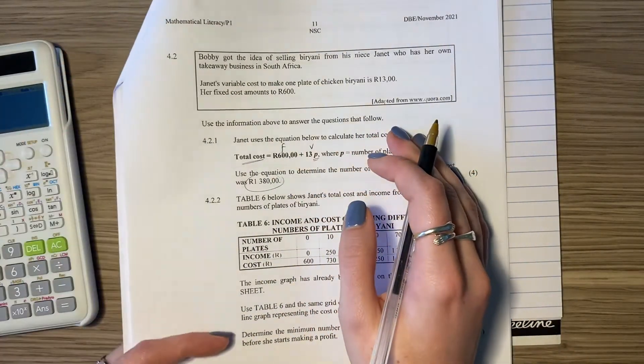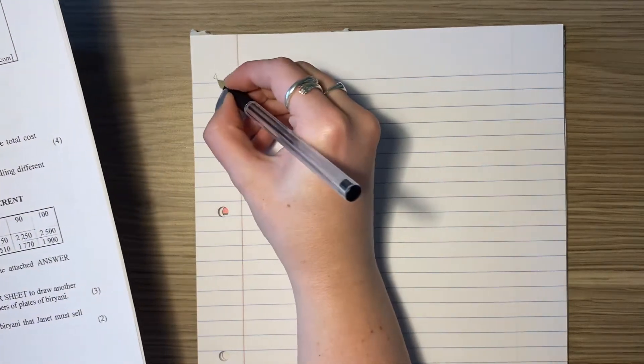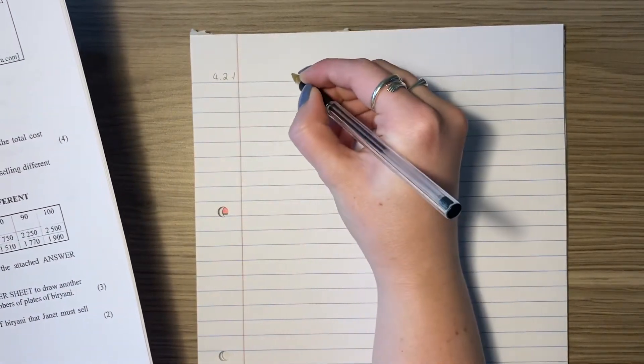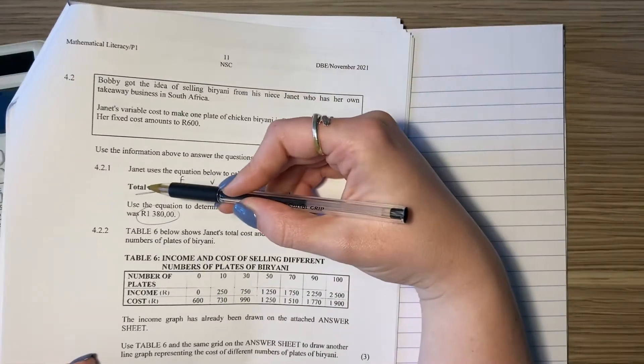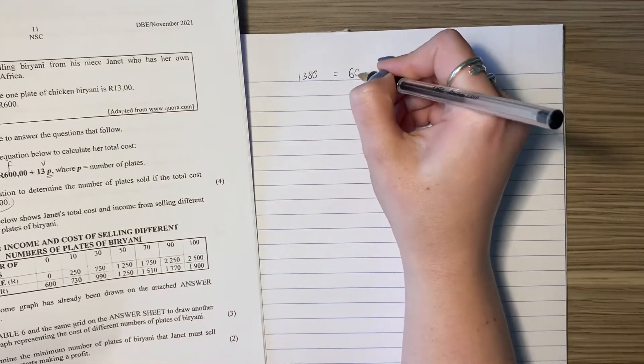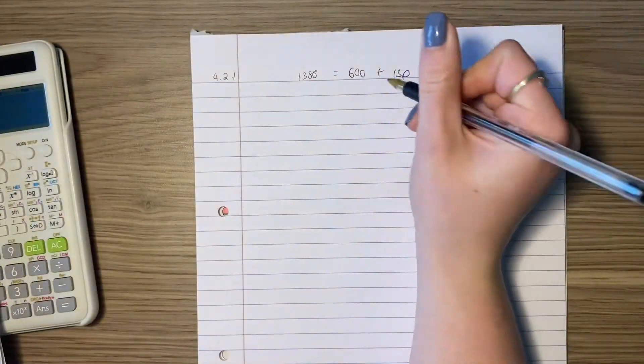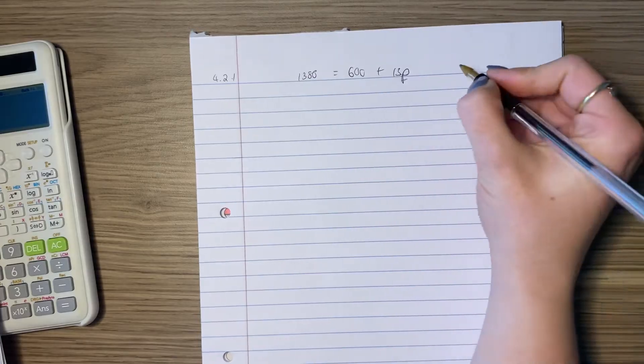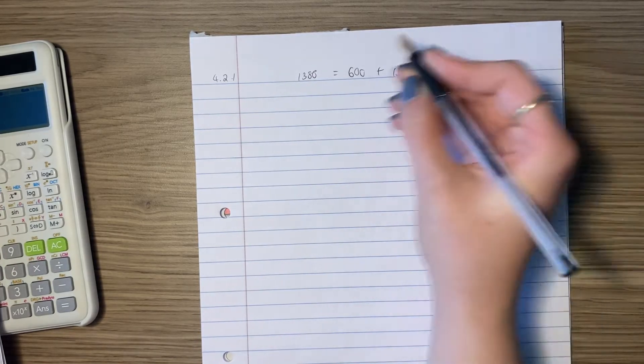So it's a little bit of algebra again but we can do it. So 4.2.1, our total cost is going to be 1380, so we're going to put that where that would have been equals 600 plus 13p. Now we need to work out what p is. Let's use some of the algebra skills that we were looking at earlier in the paper.